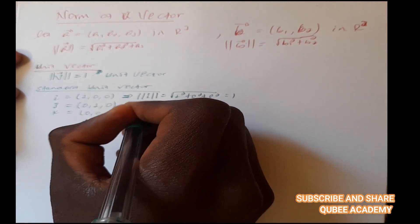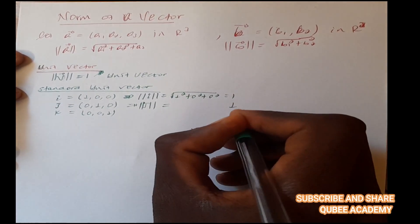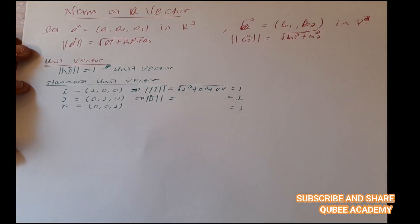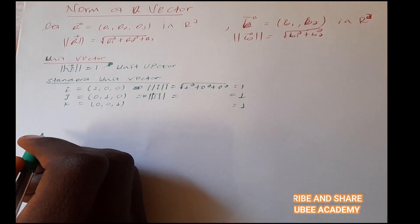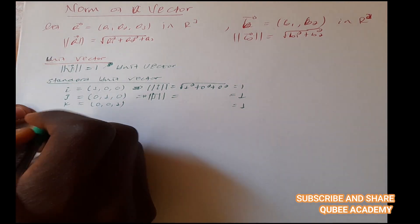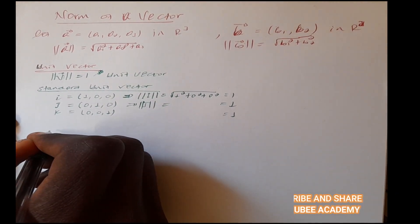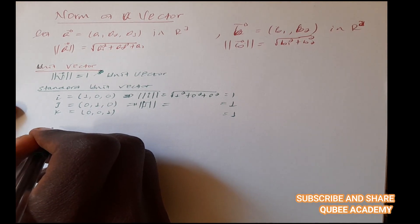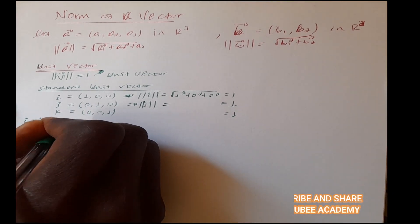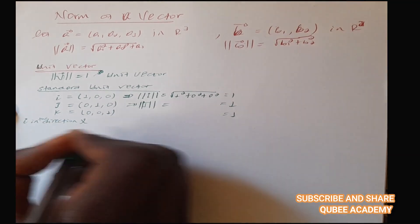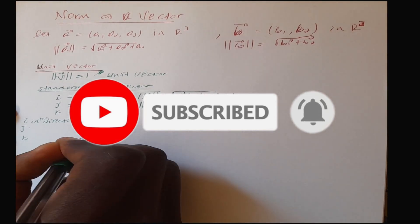The magnitude of j direction is the square root of 0² plus 1² plus 0², which equals 1. This confirms it is a standard unit vector. The standard unit vectors correspond to the x, y, and z directions.